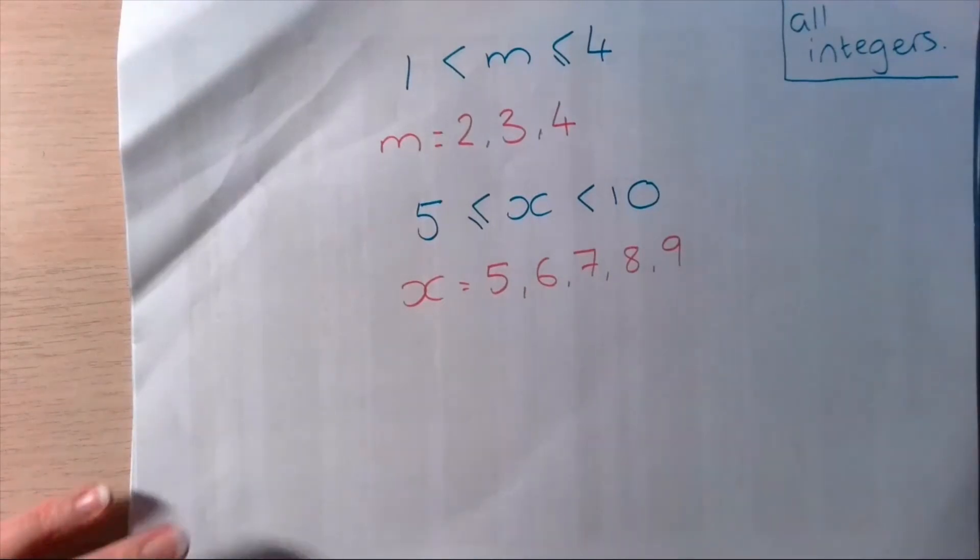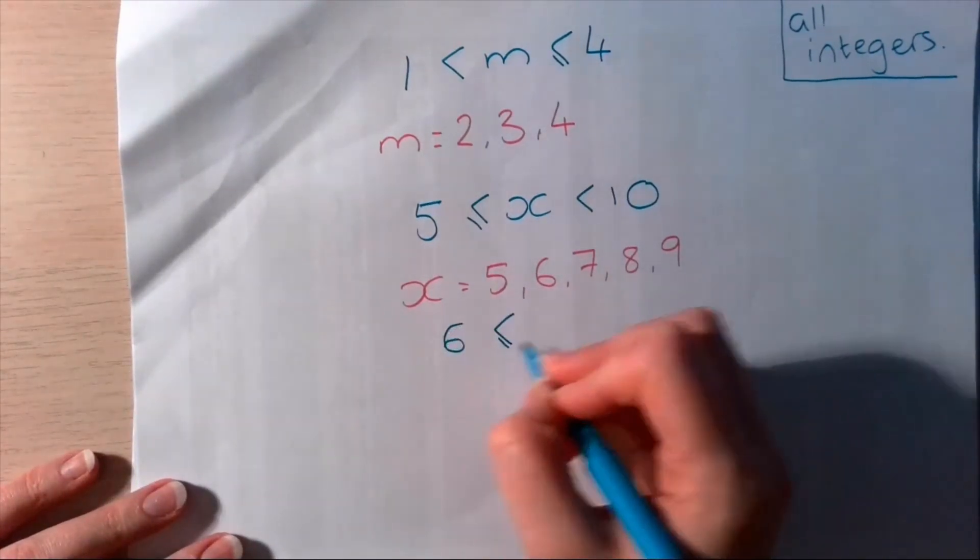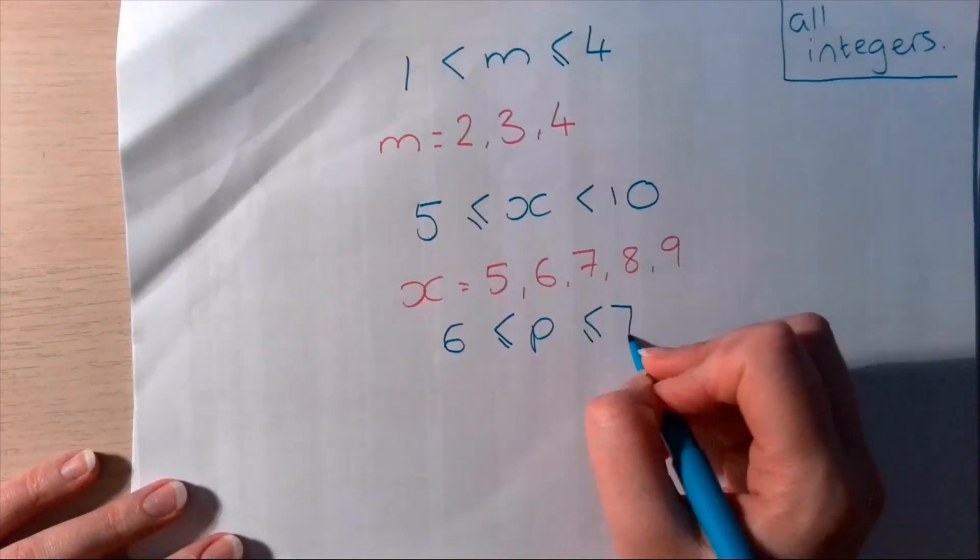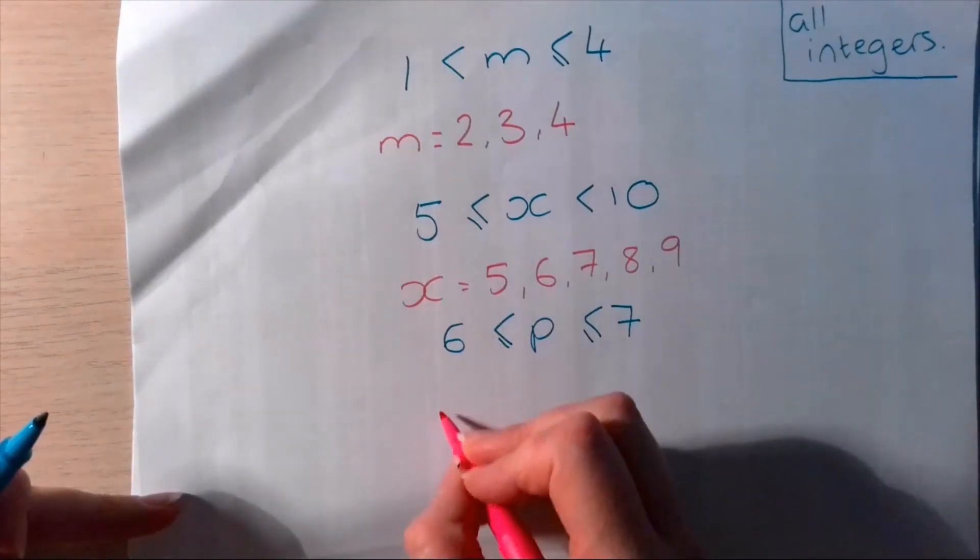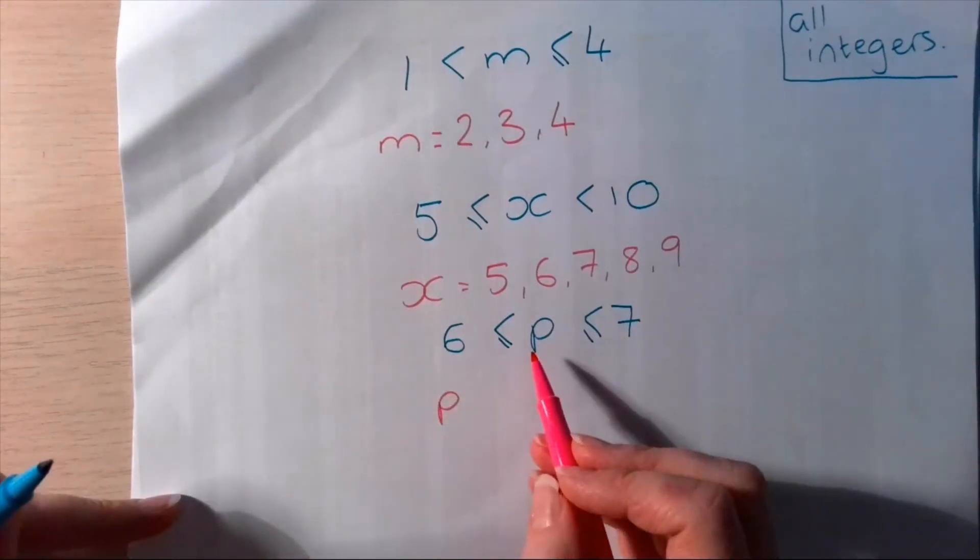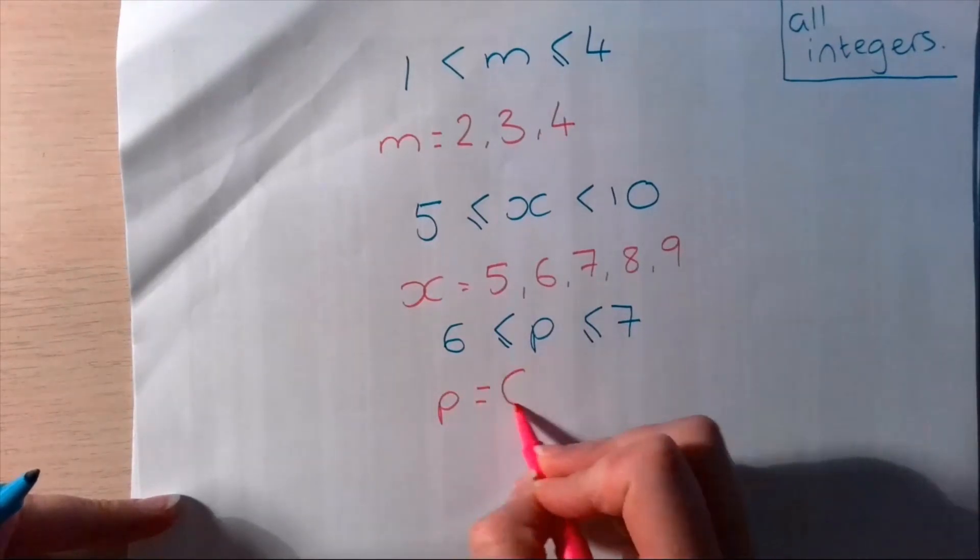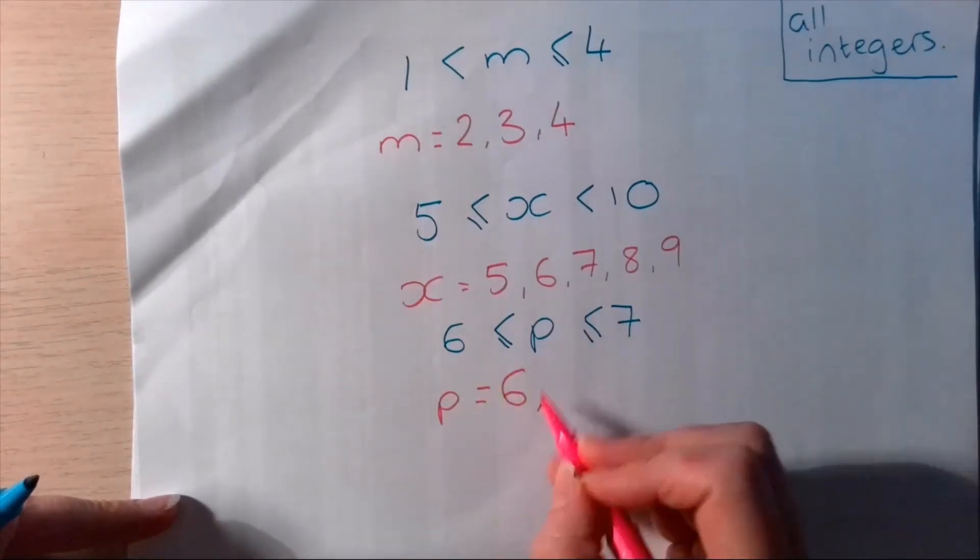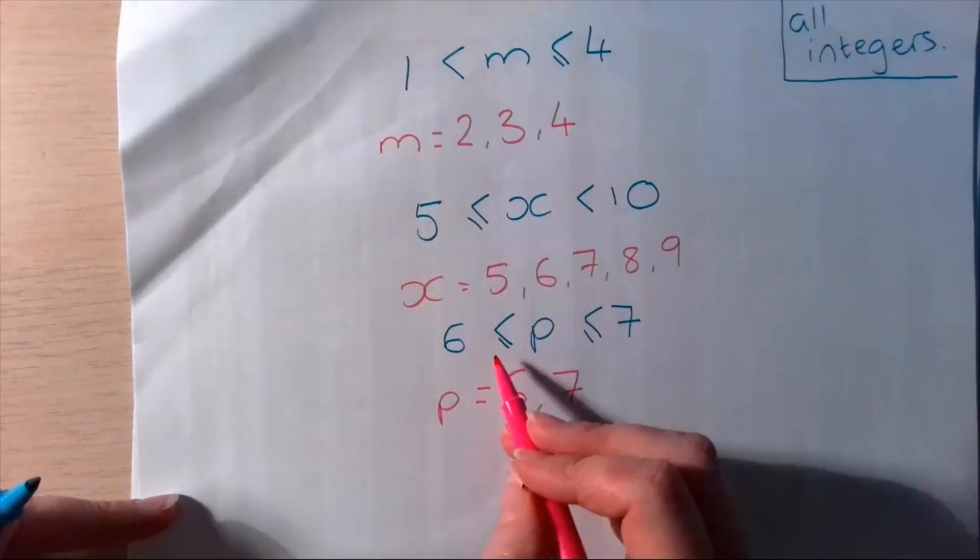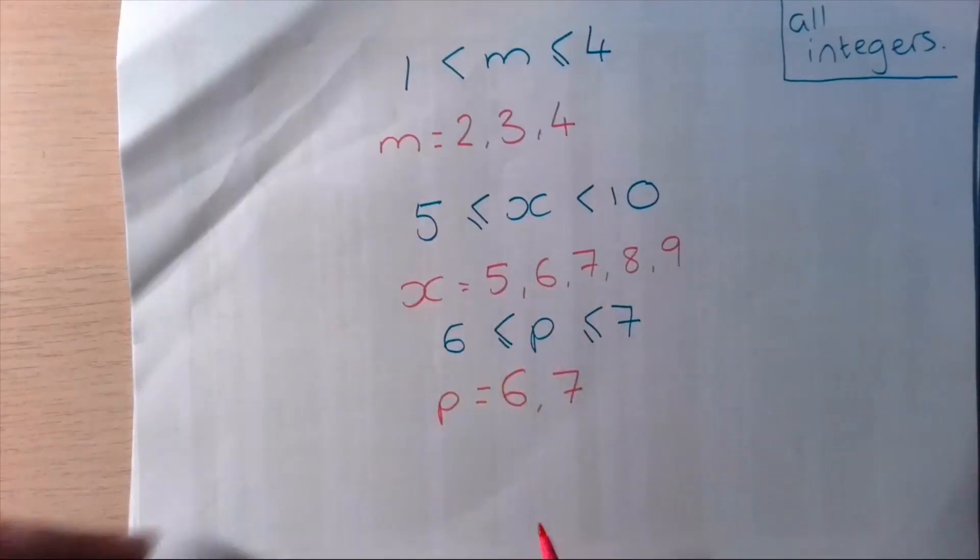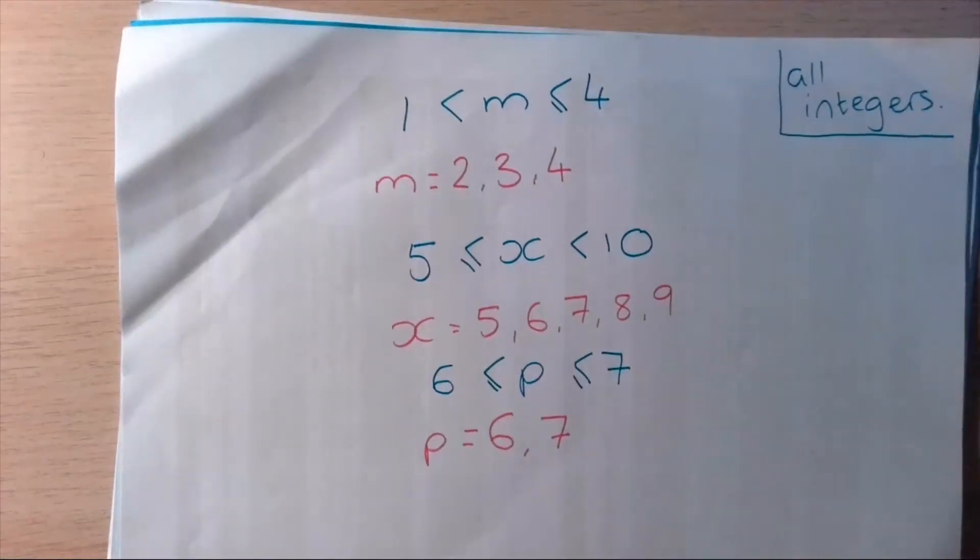I'm going to do one more, and then that's it. I told you this was going to be a short video. One more example. 6 is less than or equal to P which is less than or equal to 7. Now then, this one, we're looking at what P could be. P has got to be greater than or equal to 6. So, it could be 6. And actually, it's less than or equal to 7. So, it could be 7 as well. This time, we've got the equals on both of them. So, they're both included. So, there's three different examples, where we're looking at integers, whole numbers.